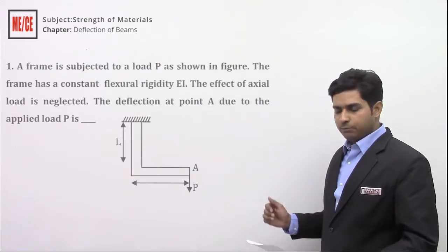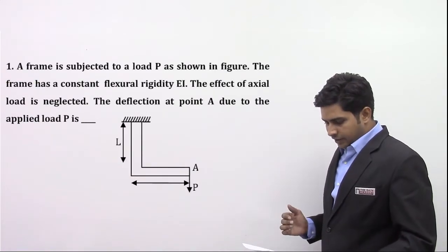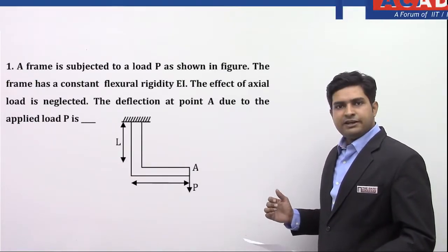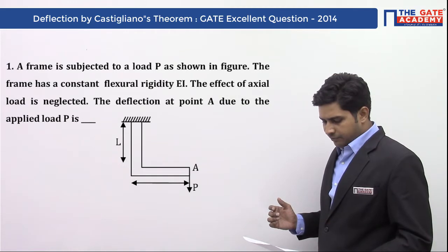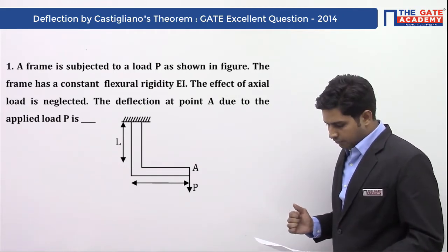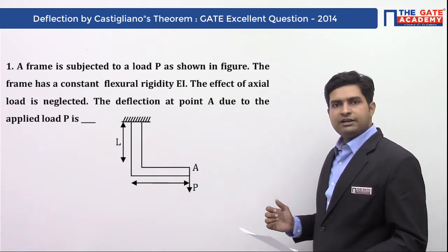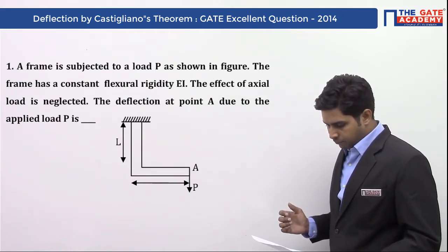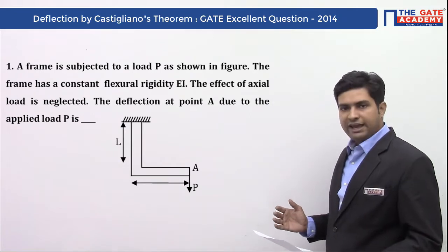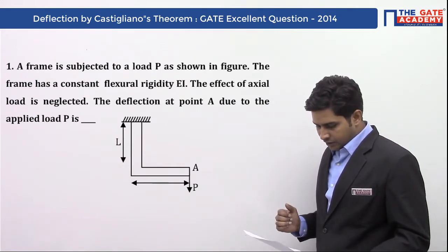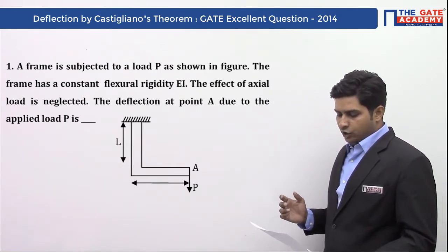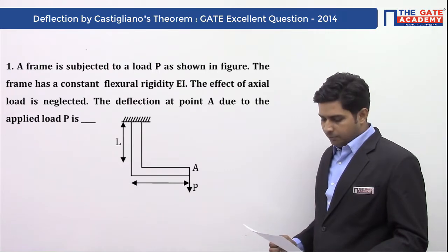Hello students, today we are going to solve an excellent gate question that has been asked in Gate 2014. For the question you can look at the board. The question is: a frame is subjected to a load P as shown in the figure. The frame has a constant flexural rigidity EI. The effect of axial load is neglected. The deflection at point A due to the applied load P is asked.